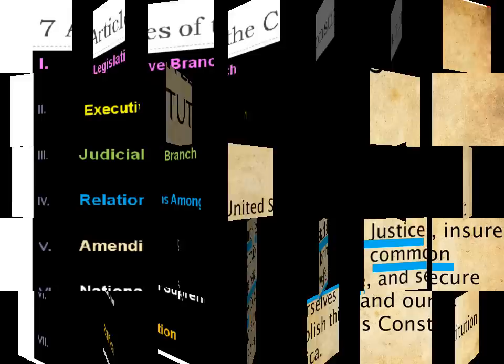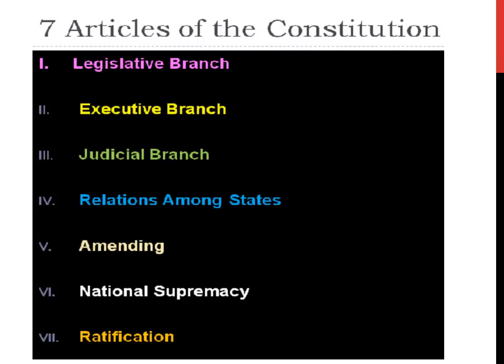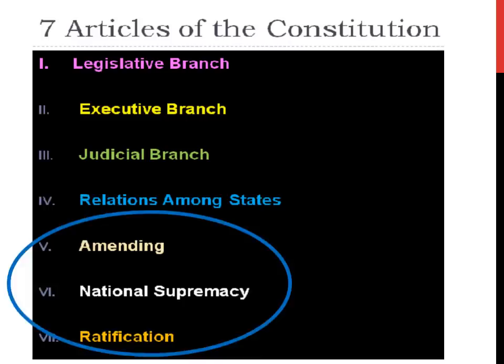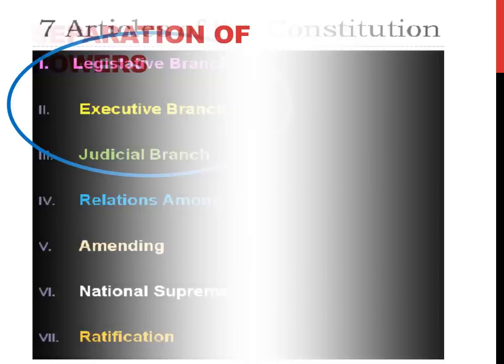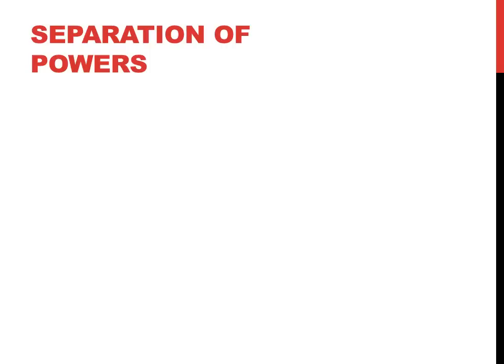Following the preamble, the Constitution organizes our government through the use of seven articles, the first three of which establish the three branches of government. The Founders made a very deliberate choice to make the legislative branch the first article and the longest, to send the message that the legislature would be the dominant branch. The establishment of three distinct branches makes the system of separation of powers possible — the idea that each branch should be given a separate responsibility to carry out.